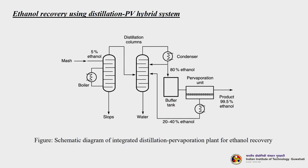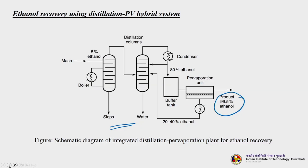A schematic representation shows VOC removal using pervaporation: VOC aqueous waste is pumped to a heater, heated to a certain temperature, fed to the pervaporation system, where water virtually free of VOCs is obtained, and through a condenser the VOCs are separated. Another classic example shows ethanol recovery using a distillation-pervaporation hybrid system: an integrated system with two distillation columns, feeding 5 percent ethanol, uses a two-stage distillation and a final single pervaporation system to obtain 99.5 percent ethanol.